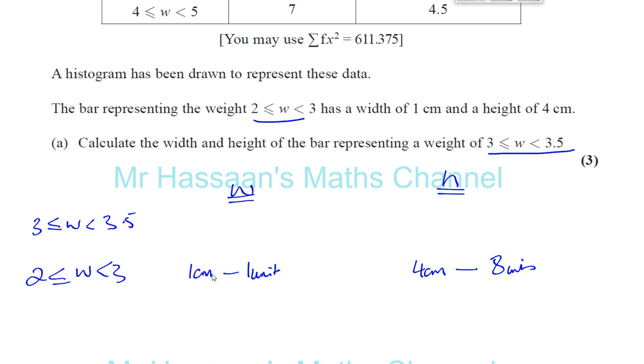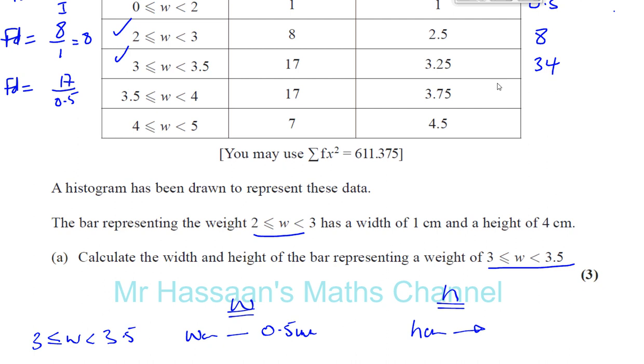Now for the 3 to 3.5 bar, we want to know how many centimeters, let's say W centimeters, represents half a unit, because it's 3 to 3.5. The width is half a unit. And for the height of the bar, we want to know how many centimeters represents a frequency density we found was 34. The frequency density is 34 there.